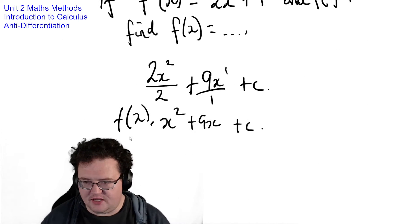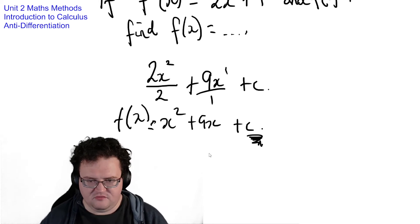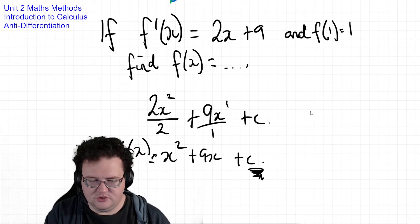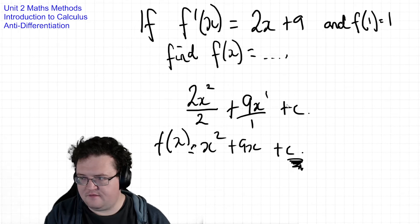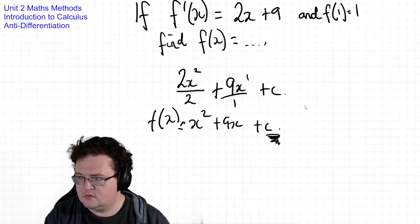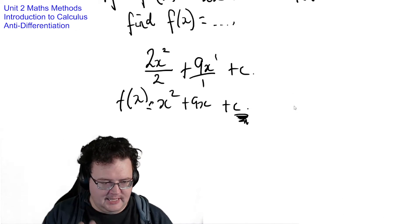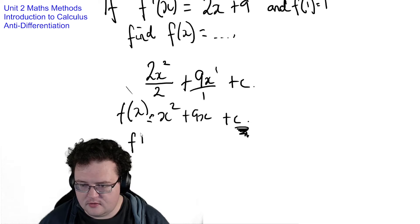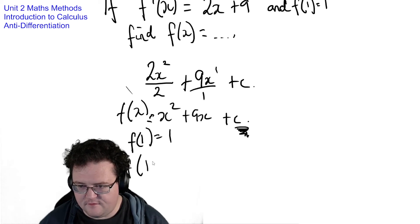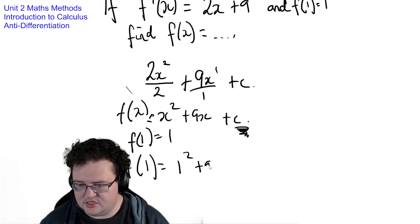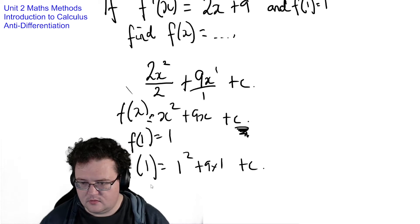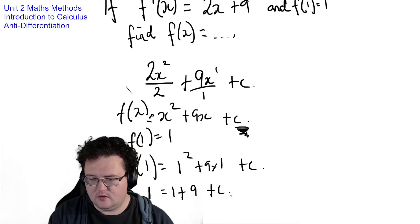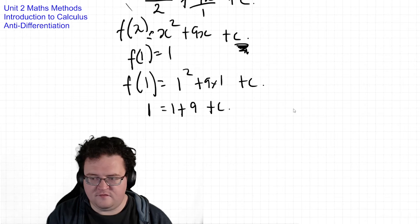But obviously, I'm not finished yet because I have a plus c that I don't want and I have this other piece of information that I found out earlier. So f of 1 is equal to 1. So let's do something with it. If f of 1 is equal to 1 then f of 1 is going to be equal to 1 squared plus 9 times 1 plus c. So that's 1 equals 1 plus 9 plus c.